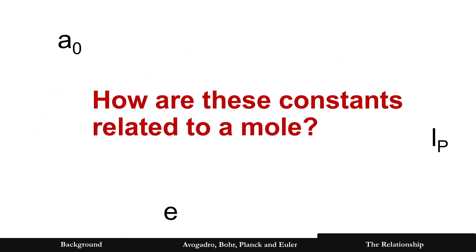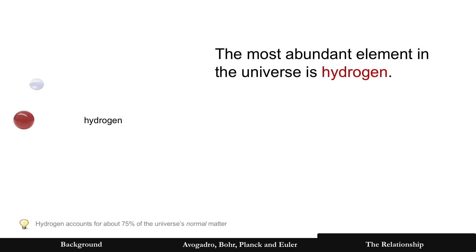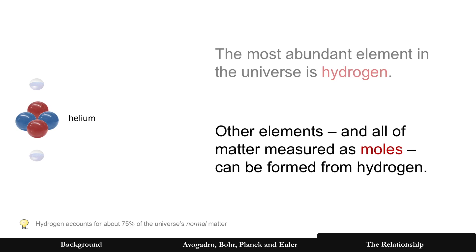Okay, but why cover those three constants? How are they related to the mole? Well, the most abundant element in the universe is hydrogen. And other elements, and since we're talking about moles, really all of the matter that we're measuring as moles, they can be formed from hydrogen. Helium, lithium, now three protons, for example. You get the idea.